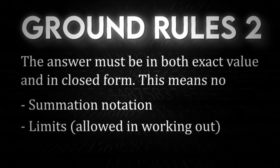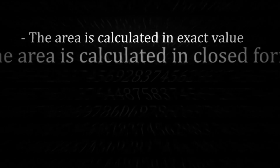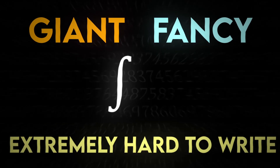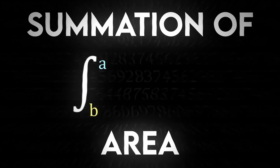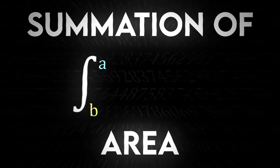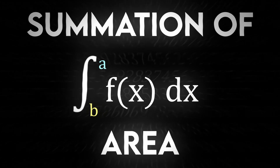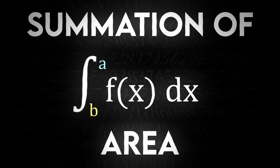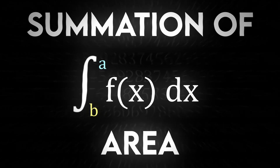We found a definition of an integral that satisfies our ground rules — it calculates exact area, and the area calculated can always be expressed in closed form. To make things easier to notate, let's write the integral as a giant, fancy, extremely hard-to-write S, representing the summation of the area between a lower bound and an upper bound. On the right of this S, let's write the area of a single column, which is the current f(x) multiplied by dx. This is the proper notation for an integral evaluated at bounds of a and b.